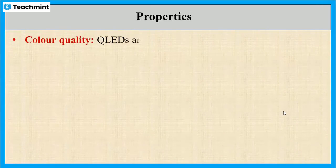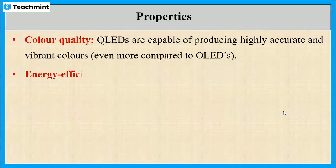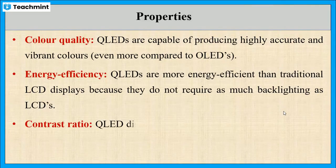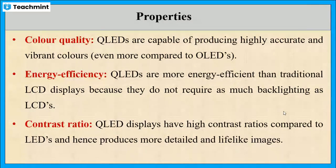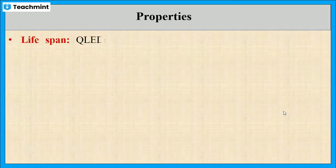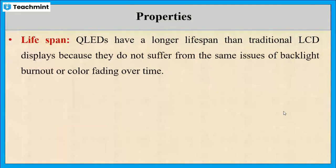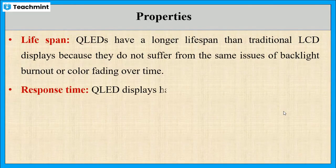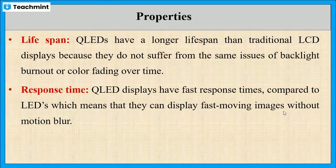Now let us see the properties of QLEDs. They are able to produce highly accurate and vibrant colors. They are highly energy-efficient than conventional LCD displays. They have high contrast ratios compared to LEDs and hence produce very clear images. QLEDs have longer lifespan than traditional LCD displays as they do not suffer from issues like backlight burnout or color fading. Further, QLED displays have faster response time and hence they can display fast-moving images without blurring.